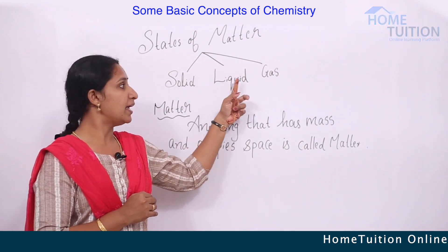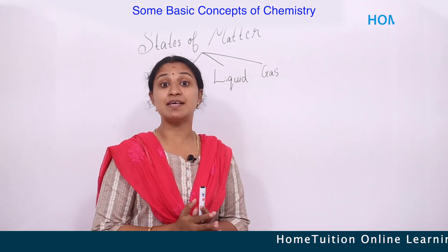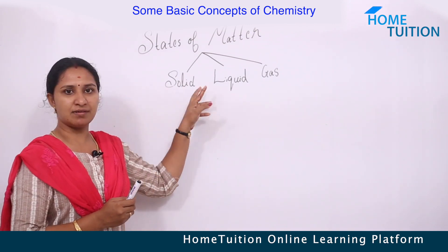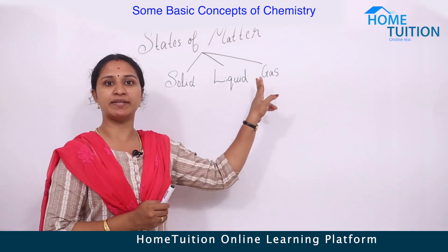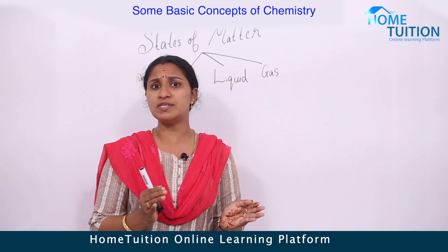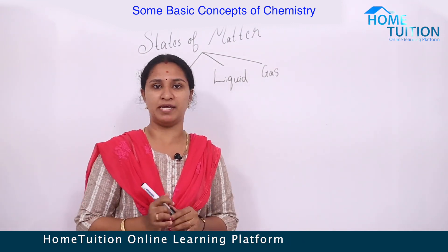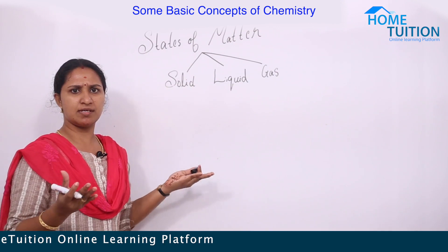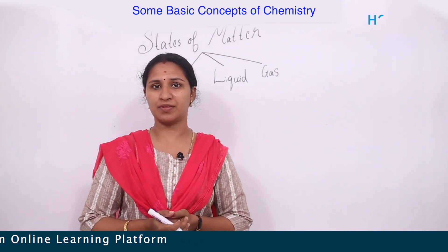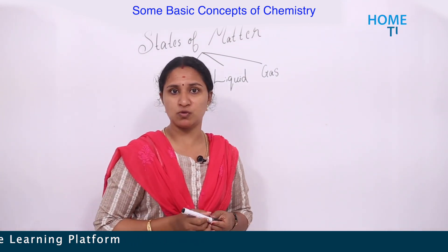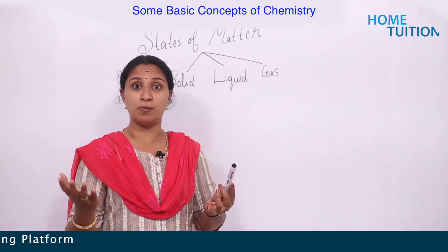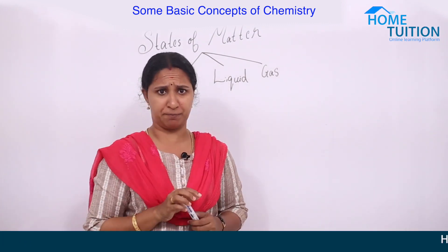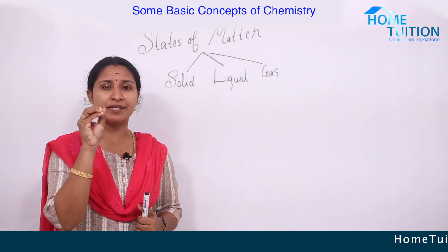The three states are: solid state, liquid state, and gaseous state. Let's discuss some properties of these states. For solid state, examples are the pen, pencil, dust, bench, or book — all these are in solid state. They have a definite shape and size and occupy a definite space.